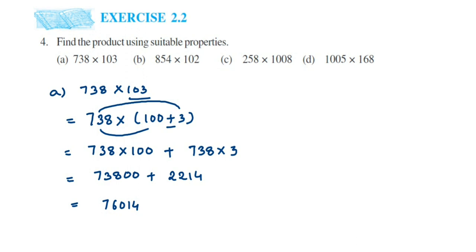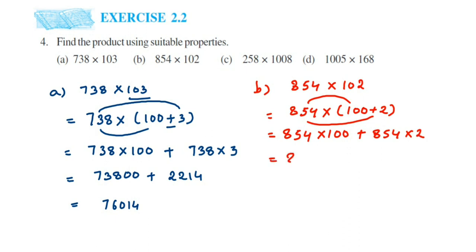Now the second question: 854 × 102. We're going to split 102 again, so 854 × (100 + 2). Multiply 854 with 100 to get 85,400, plus multiply 854 with 2 to get 1,708. Add these to get 87,108.